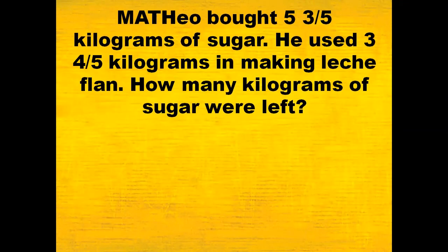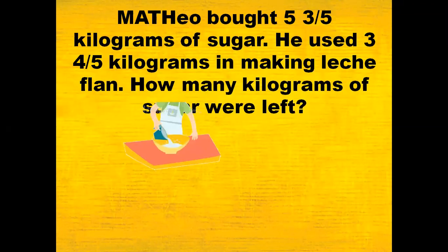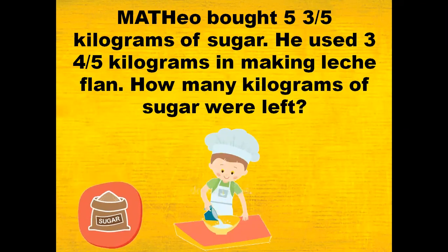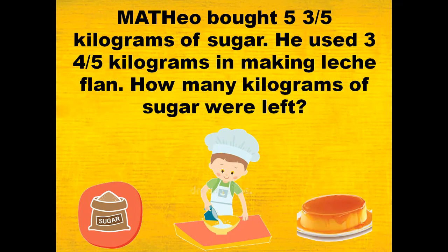Now, let's talk about the problem of Mateo. Mateo bought five and three-fifths kilograms of sugar. He used three and four-fifths kilograms in making leche flan. How many kilograms of sugar were left?